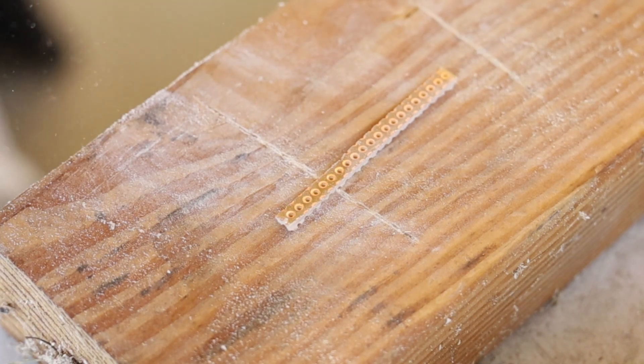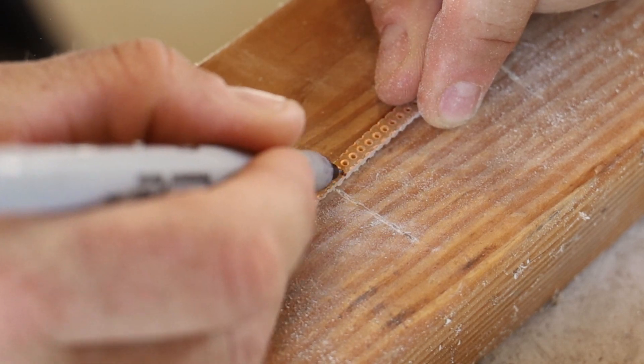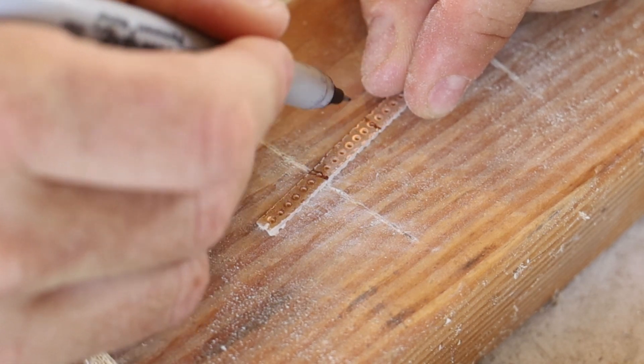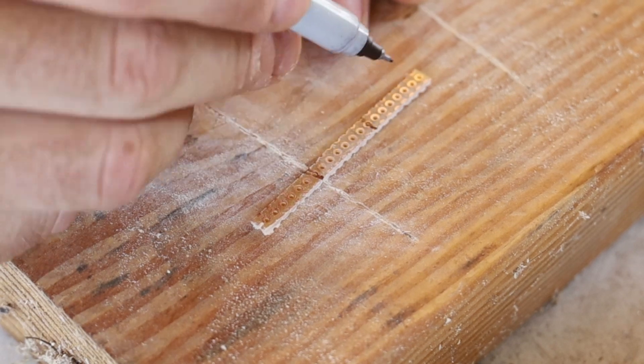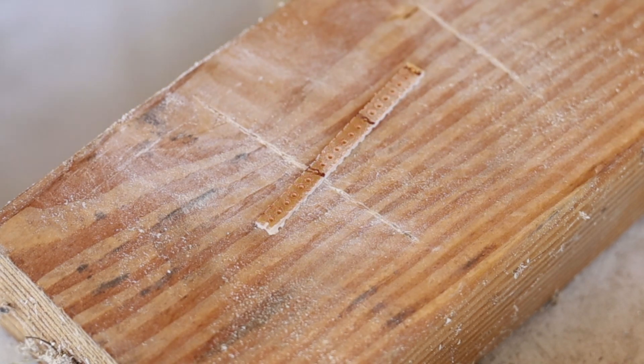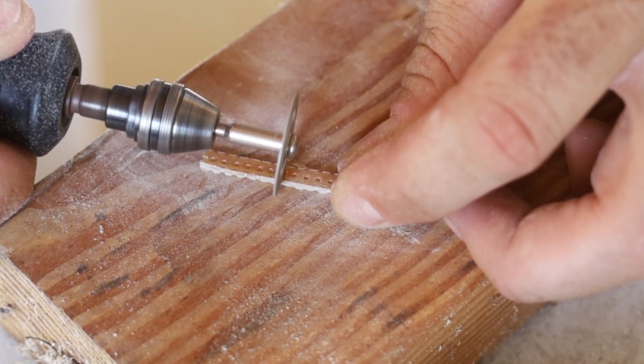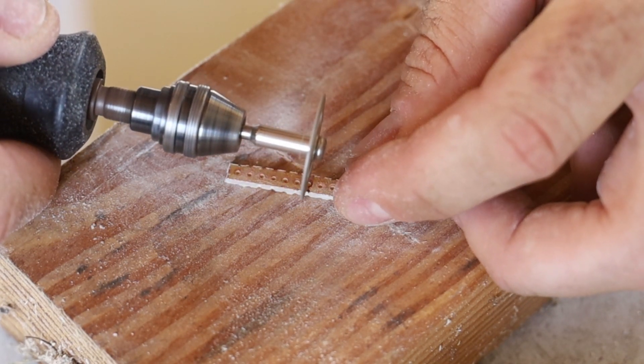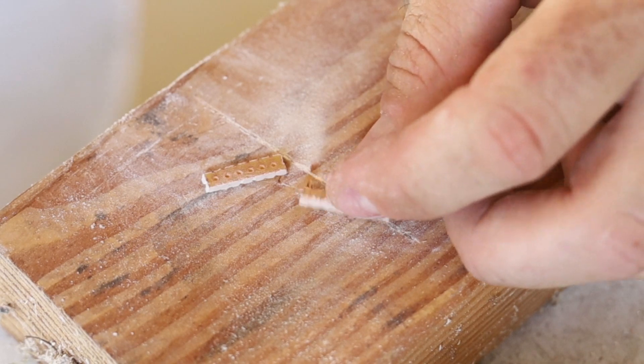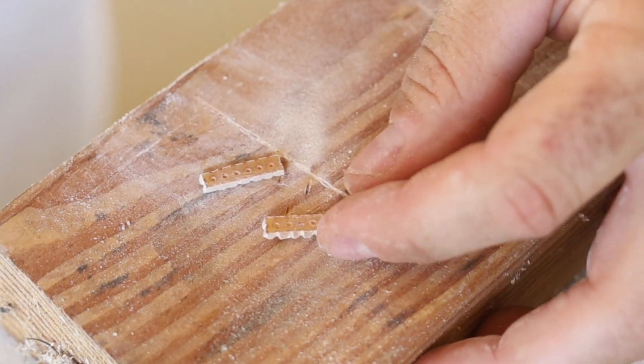So now that we've got our strip here, I'm going to cut it into segments that are six holes long. One, two, three, four, five, six. So I'm going to cut across the seventh. I'll repeat this process to create multiple segments at the right length.